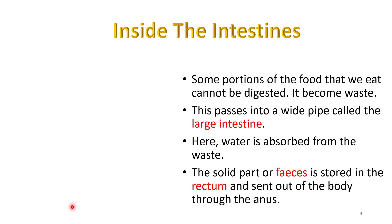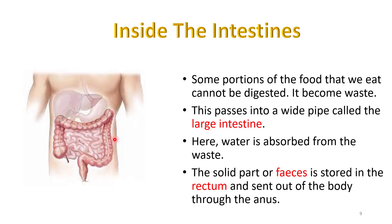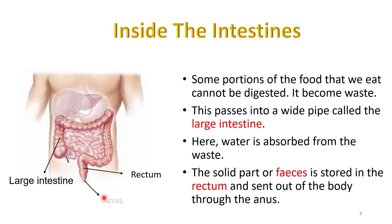Some portion of the food that we eat cannot be digested and it becomes waste. This passes into a wide pipe called the large intestine, as we can see. Here water is absorbed from the waste and the solid parts, or feces, are stored in the rectum. From here the waste products are sent out through the anus.